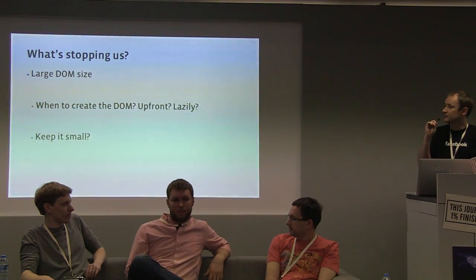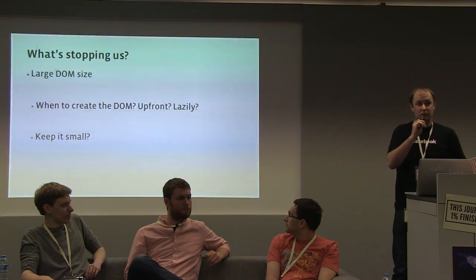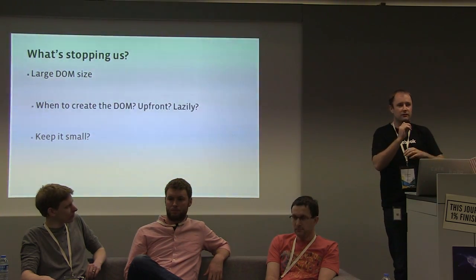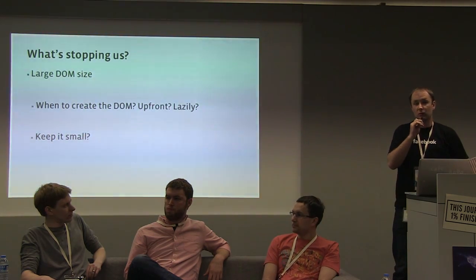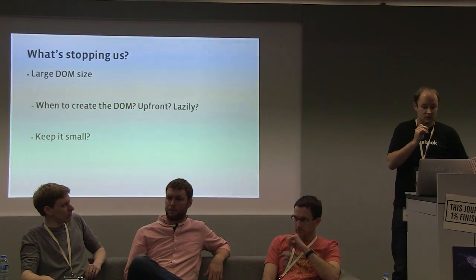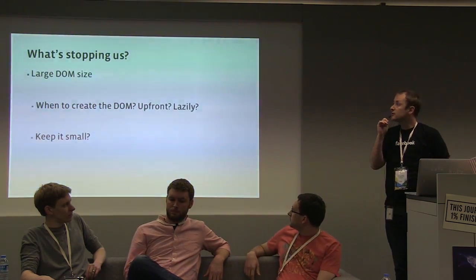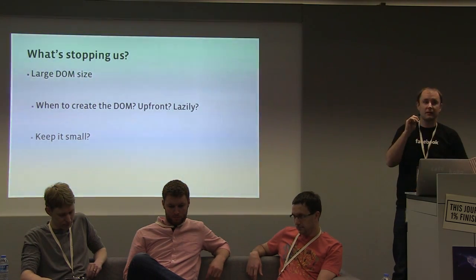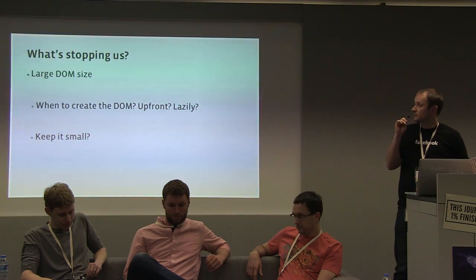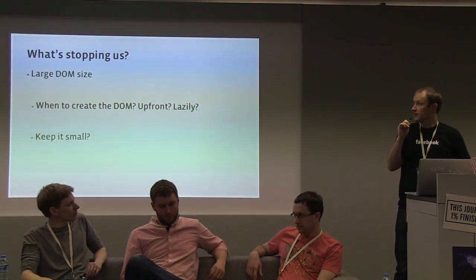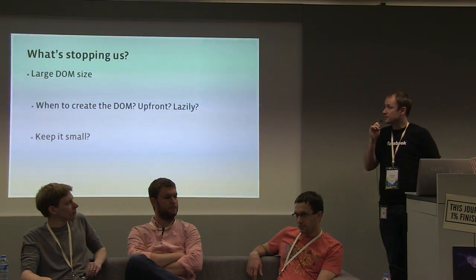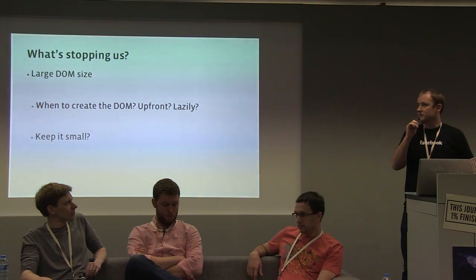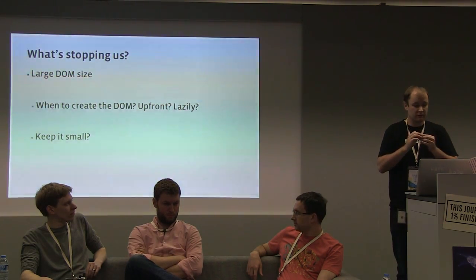What's stopping us getting there? There's a whole bunch of things. First is large DOM size. Take Facebook newsfeed: you have variable height rows made up of large images, small images, no images, variable length text — everything changes size and you don't know what size it is until you're trying to show it. If you have thousands of these, the browser runs into serious memory problems. You have to decide: do you create it up front and take an upfront hit, or create it lazily? Gmail takes a hit up front; Facebook tries to make the upfront hit very small and render later.